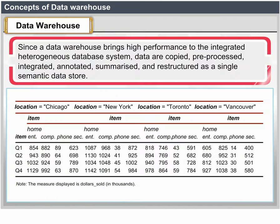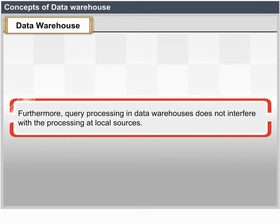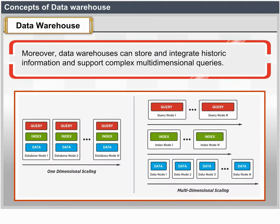Data warehousing provides an interesting alternative to this traditional approach. Rather than using a query-driven approach, data warehousing employs an update-driven approach in which information from multiple heterogeneous sources is integrated in advance and stored in a warehouse for direct querying and analysis. A data warehouse brings high performance to the integrated heterogeneous database system because data are copied, preprocessed, integrated, annotated, summarized and restructured into one semantic data store. Furthermore, query processing in data warehouses does not interfere with processing at local sources, and data warehouses can store and integrate historic information and support complex multidimensional queries.